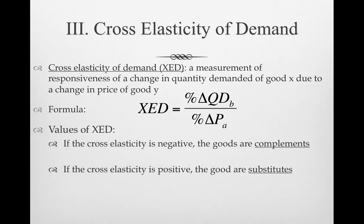If you calculate XED and get a negative number, those goods are complements — goods that are often purchased together. If the value is positive, those goods are substitutes. And if you ever get zero, those goods are unrelated. Please note: negative means complements, positive means substitutes, and zero means unrelated.